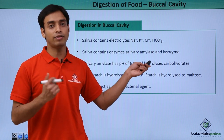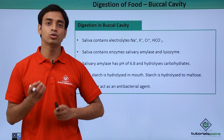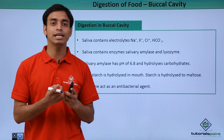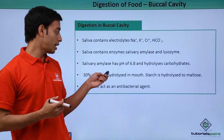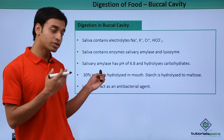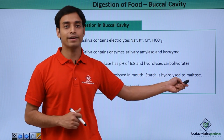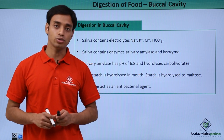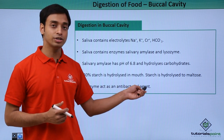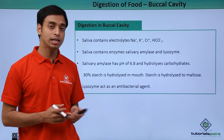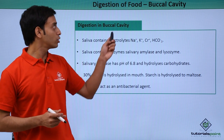Salivary amylase has a pH of about 6.8, making it slightly acidic, and it has a hydrolytic function for carbohydrates — it breaks down carbohydrates into simple, easily absorbable products. Thirty percent of the hydrolysis of starch takes place in the mouth, where starch is hydrolyzed into a disaccharide called maltose. Lysozyme acts as an antibacterial agent and helps prevent infection.